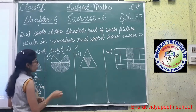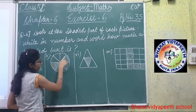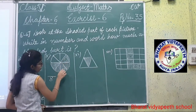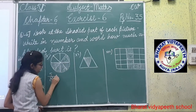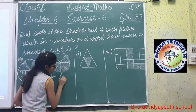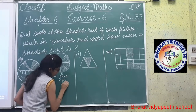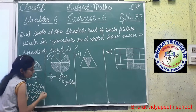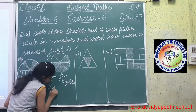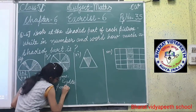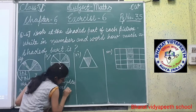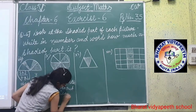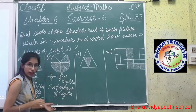Clear? Now see number 9. Total number of parts: 1, 2, 3, 4, 5, 6, 7, 8. Shaded part: 1, 2, 3, 4, 5. Now what can we write? 5 over 8. Second formula: 5 parts out of 8. Clear to you all.